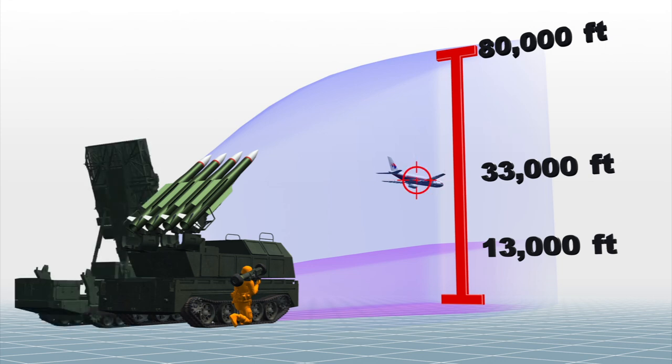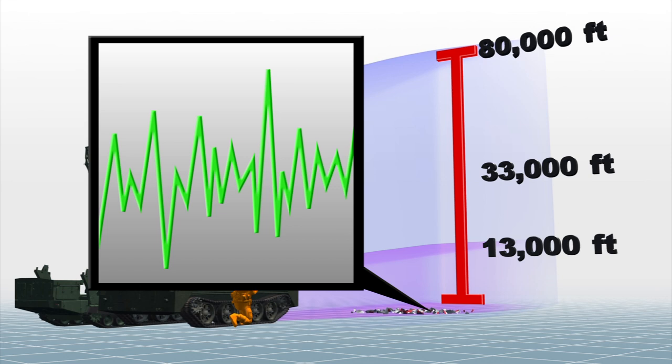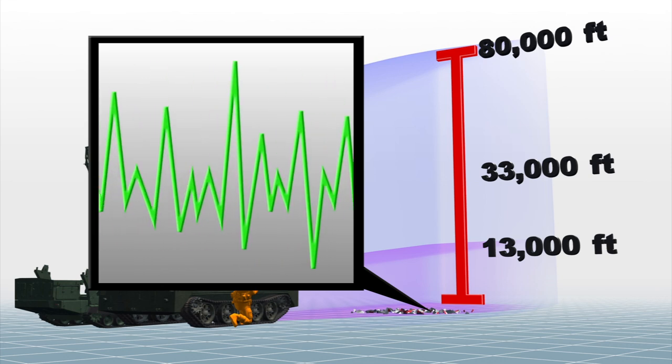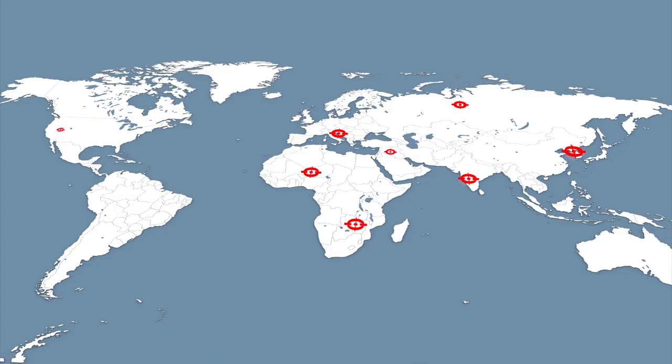The system often includes a target acquisition radar vehicle to guide the transporter erector launcher. The exact weapon can be confirmed with chemical signature analysis of the debris, and the manufacturer of the missile can then be identified.